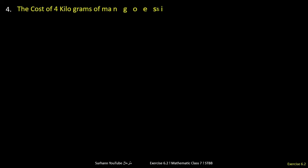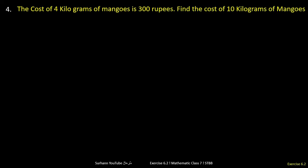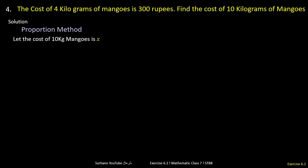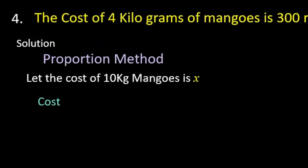Exercise 6.2, question number four: the cost of 4 kg mangoes is 300 rupees. Find the cost of 10 kg mangoes. We will solve it by the proportion method. Suppose the cost of 10 kg mangoes is x. Here two quantities are in proportion: cost and mangoes in kg. 300 rupees is the cost of 4 kg mangoes, and we have to find the value of x for 10 kg mangoes.